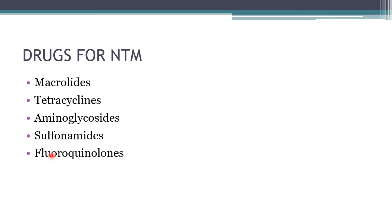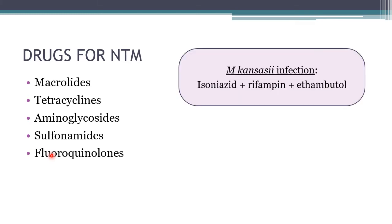Mycobacterium kansasii infection resembles M. tuberculosis infection but is milder. The treatment regimen uses isoniazid plus rifampin plus ethambutol — these three drugs are used in combination to avoid the development of resistance.